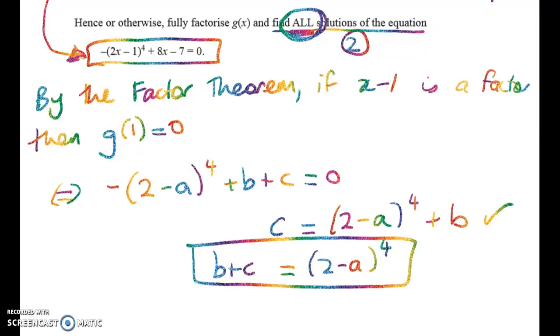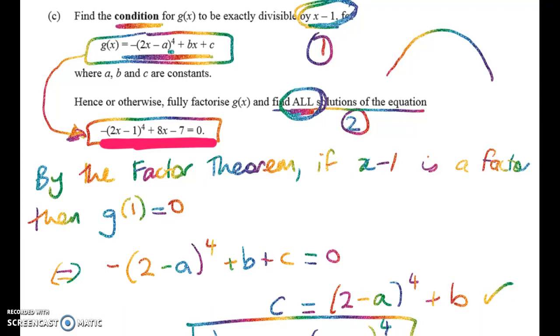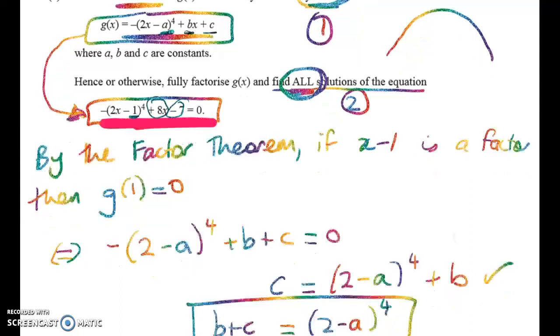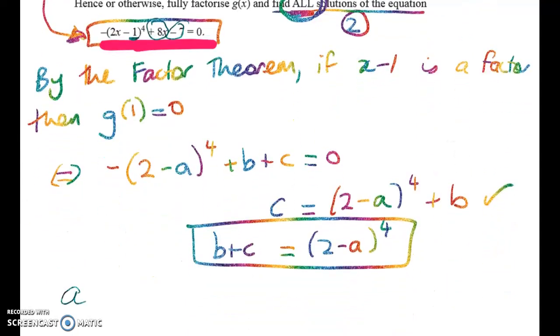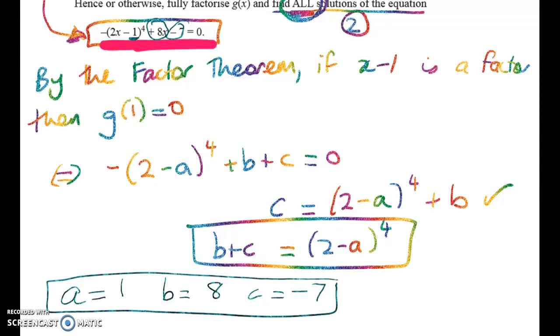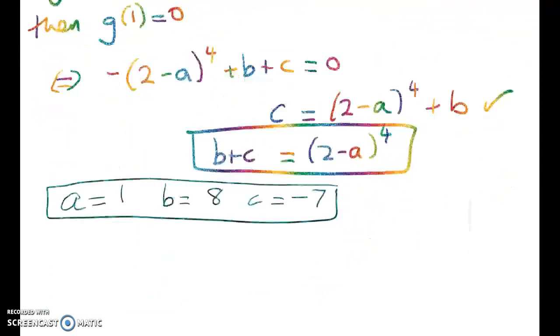Now that's your lead-in to the second part of the question, which is to solve a particular quartic equation, and it's this one here. So what we have to do in order to say that x minus one is a factor, we've got to check that the condition here holds. So we're going to go back up here and say, well, what's a? a down here is one, b is going to be eight, and c is going to be negative seven. So a equals one, b equals eight, and c equals negative seven.